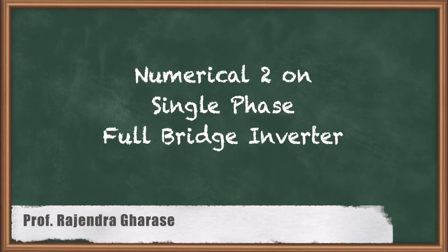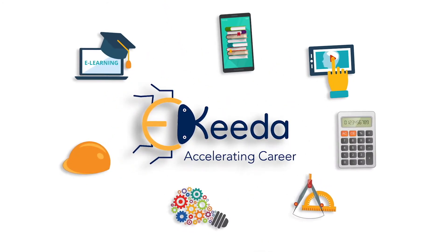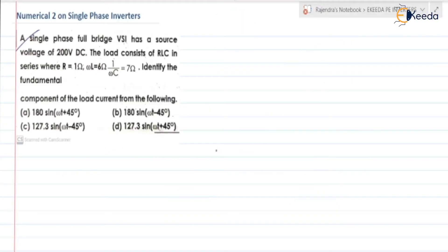Hello friends, in this video we are going to discuss numerical 2 related to single phase inverters. So let us read the example. A single phase full bridge voltage source inverter has a source voltage of 200V. So we are having a full bridge inverter, and the supply voltage EDC is equal to 200V.